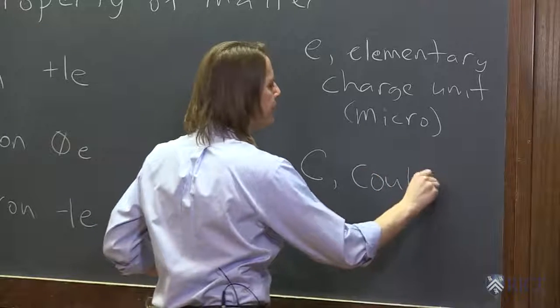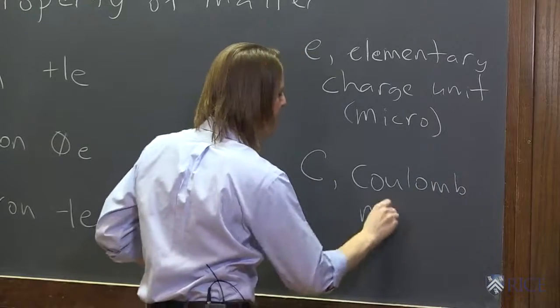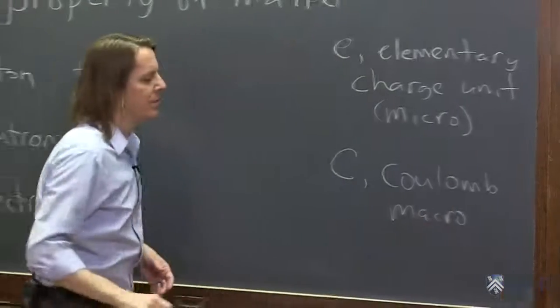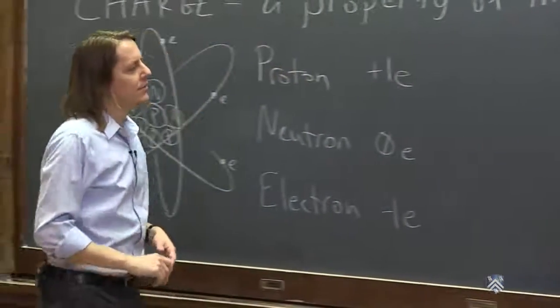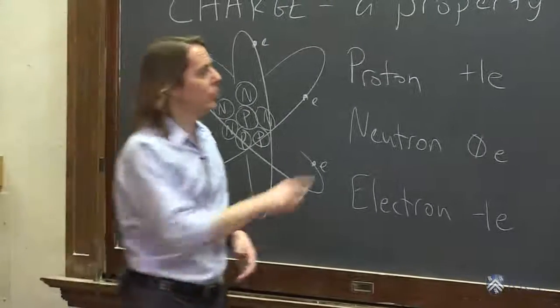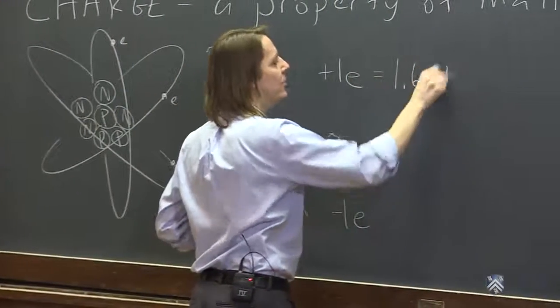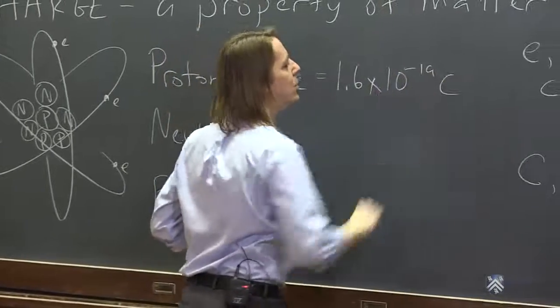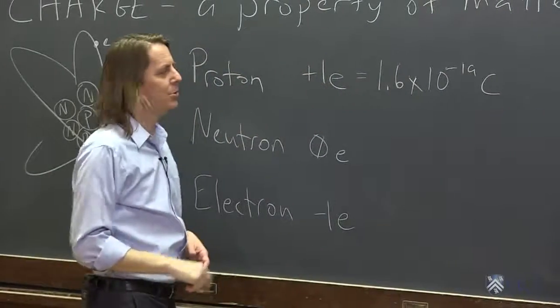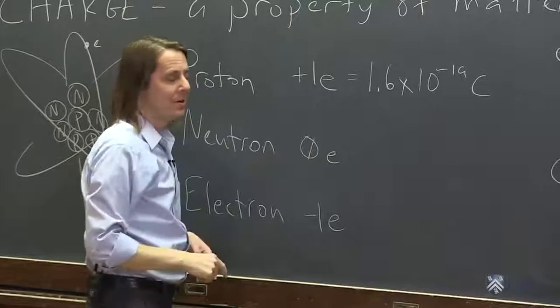Which is for Coulomb. And that's the macro. And you can see the connection is pretty big. So 1e equals 1.6 times 10 to the minus 19 Coulombs. That's a big gap between atomic and macroscale.